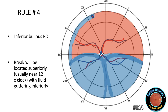Rule number four: for a bolus inferior retinal detachment, the situation is different — we would actually expect the break to be superiorly located. The bolus detachment occurs inferiorly because a superior break is allowing fluid into the subretinal space, and that fluid pools inferiorly. If there were an inferior break, the fluid wouldn't be loculated and the detachment would likely be shallow. This superior break is often around the 12 o'clock position, with fluid guttering down into the inferior subretinal space.